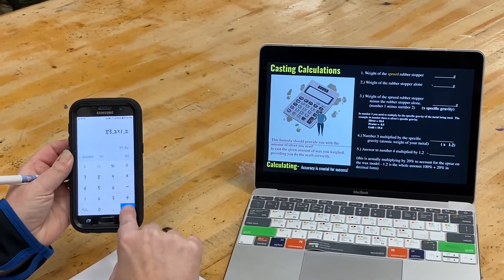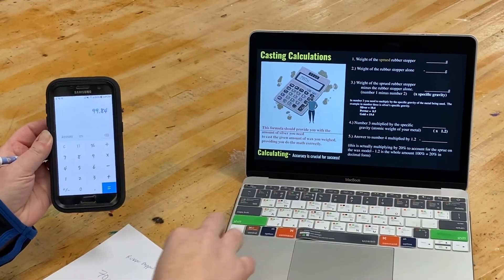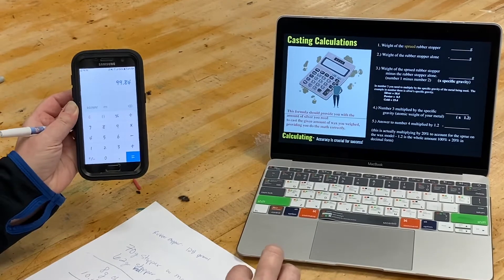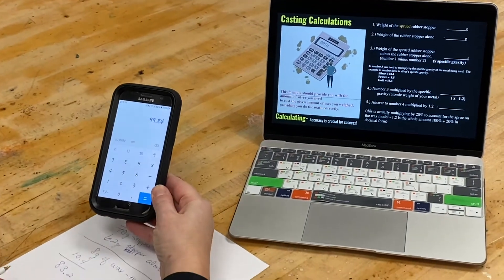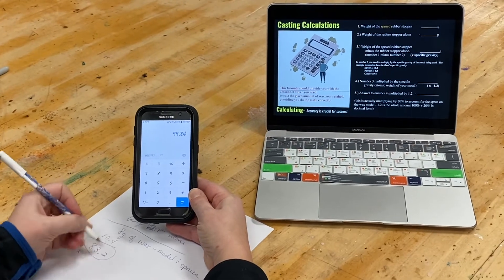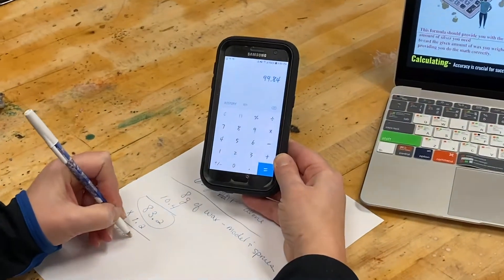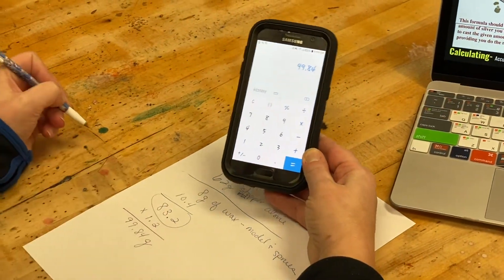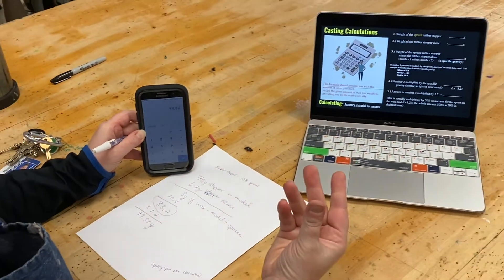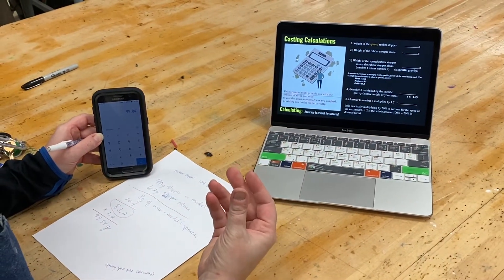I'm going to add 20% so that I account for any kind of loss. I want to end up with a button on the bottom of my piece. And in order to do that, I actually have to add that 20%. So I'm going to take this calculation times 1.2, and that leaves me with 99.84 grams is what I would have to have in silver to cast that really ugly piece that did not have any filing or sanding done on it.